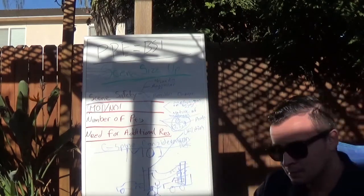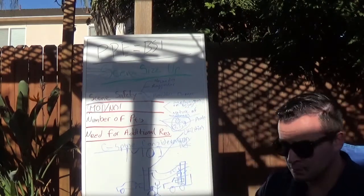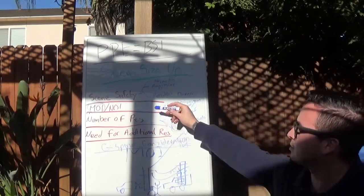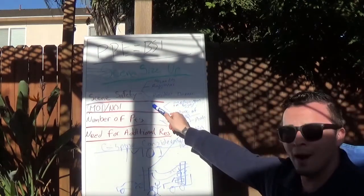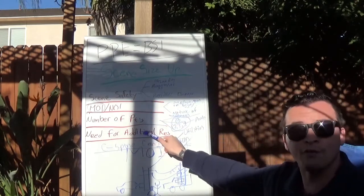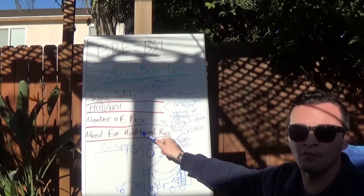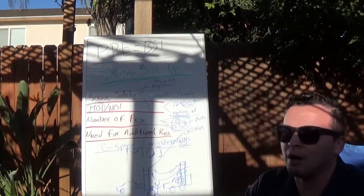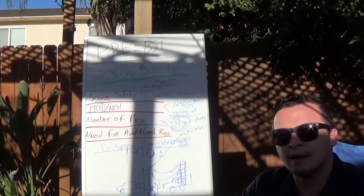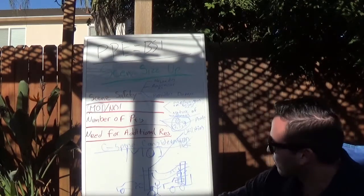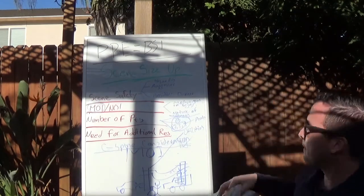So as far as your scene size up, this is it. Not a big deal. So it's like this: BSI, is my scene safe? It is, awesome. What's my MOI or my NOI? Is this my only patient? I'm going to go ahead and call for additional resources. I can always cancel if I don't need them. And I'm also going to consider C-spine depending on what my patient states and the MOI, if there is an MOI, if it's not a medical condition.